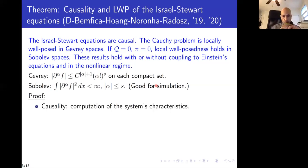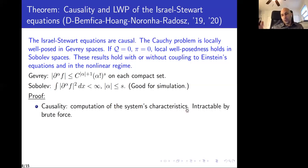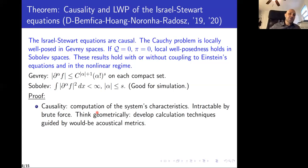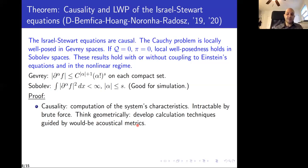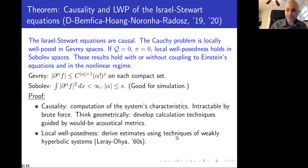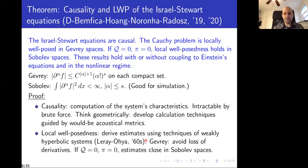Let me say a few words about how we prove this result. Causality boils down to computing the system's characteristics, which is the main step — though the actual computation is a little more complicated. For the Israel-Stewart equations, this problem is basically intractable by brute force since the equations are too complicated for a direct computation of the characteristics. So we think geometrically: we developed calculation techniques guided by the underlying geometry of the problem, inspired by the notion of acoustical metric, which is a geometric notion appearing in the ideal fluid case. Local well-posedness is done using techniques for weakly hyperbolic systems going back to the work of Leray and Ohya in the 1960s.